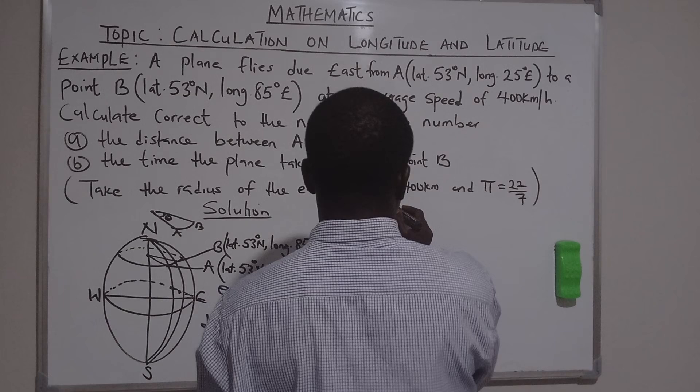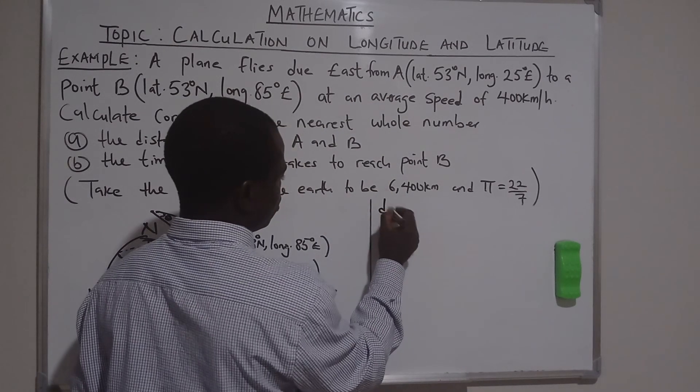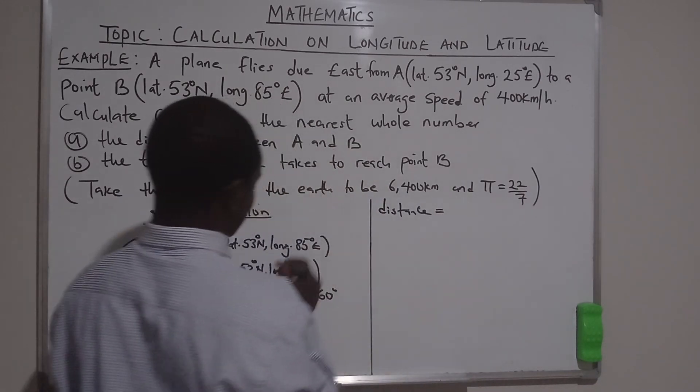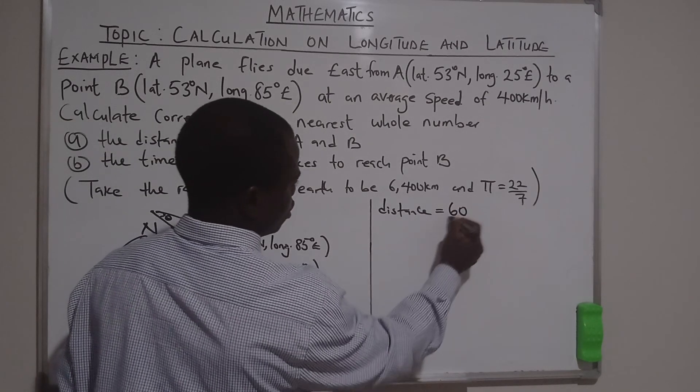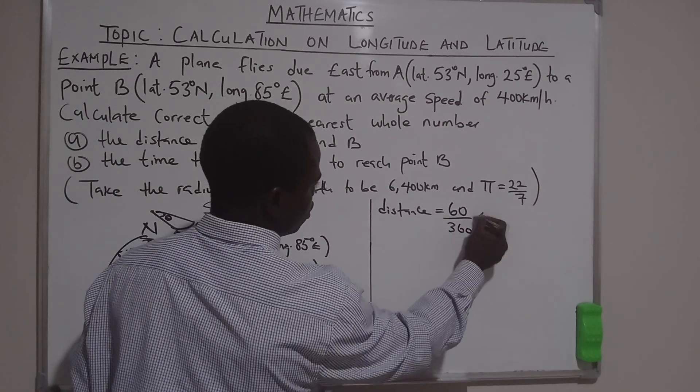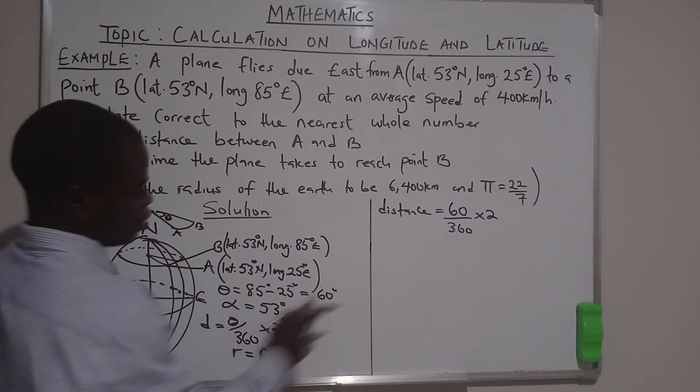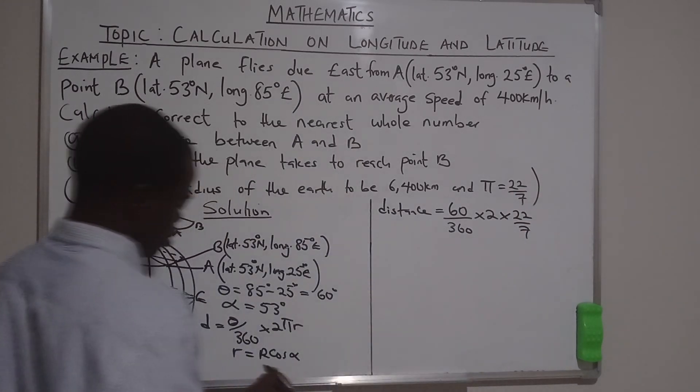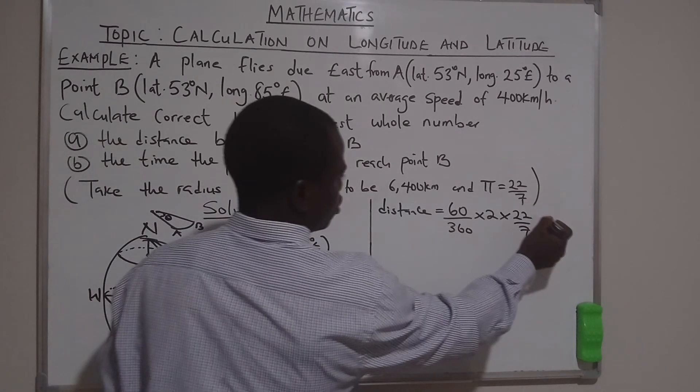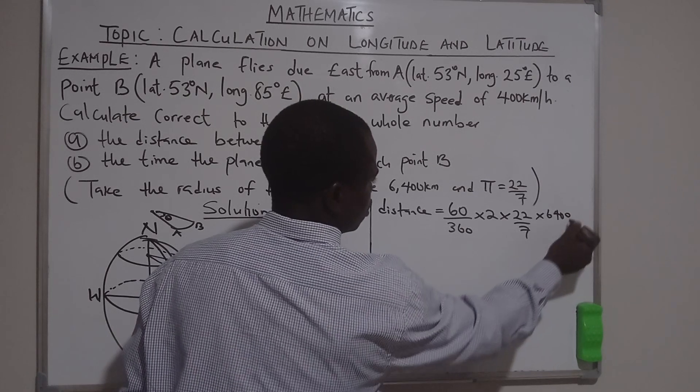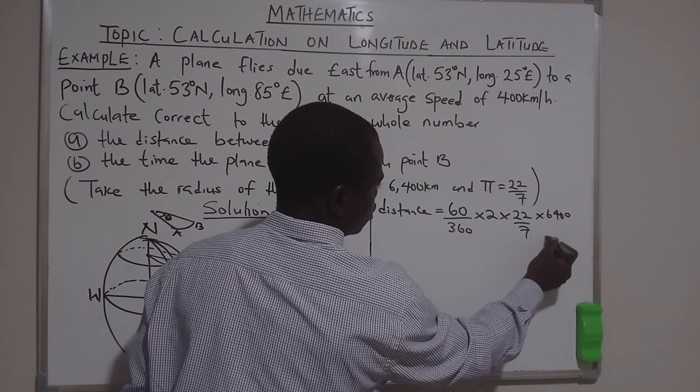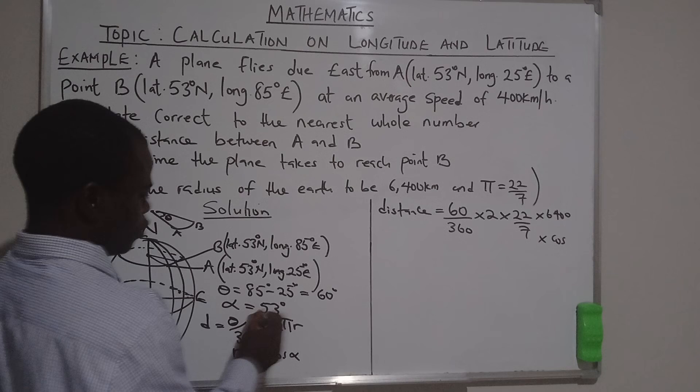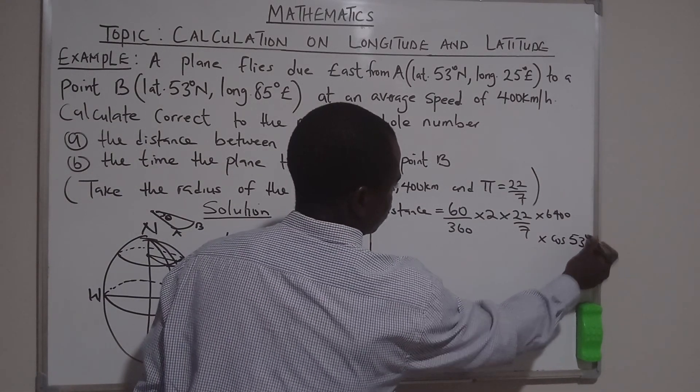The distance will be the theta 60, 60 divided by 360, times 2 times pi giving 22 over 7 times 6400 times cos our alpha is 53 degrees times 53 degrees.